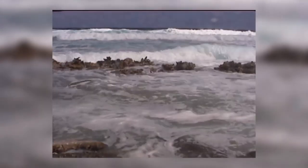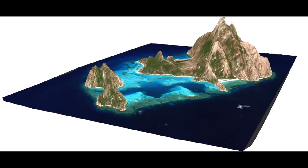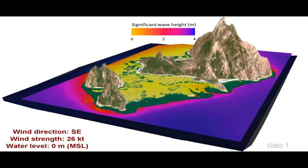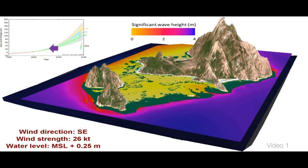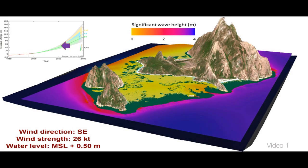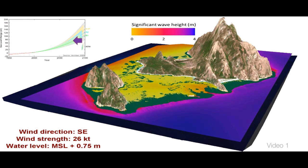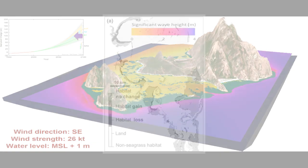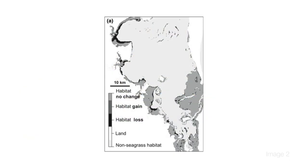Once we have all of these data sets together, we can then examine the relationships between where seagrass occurs and doesn't, and the environment in those places. We can then simulate the sea level rising and re-predict where we expect the environment to be suitable for seagrass in the future. This gives us a detailed map of a predicted future habitat of seagrass.